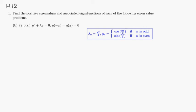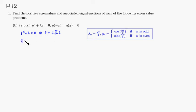Let's look at the Hallmark 12 problem 1 part B and solve this eigenvalue problem. First we can write the characteristic equation which is R squared plus lambda is equal to 0. We're going to get the complex roots so R is going to be equal to plus or minus square root of lambda times i. The general solution is going to look like Y equals A cosine of square root of lambda times X plus B sine of square root of lambda times X.